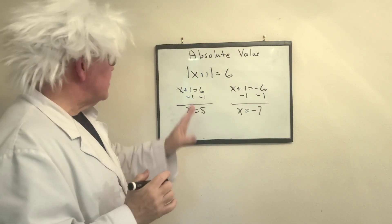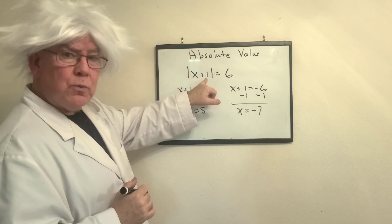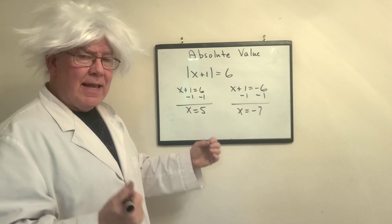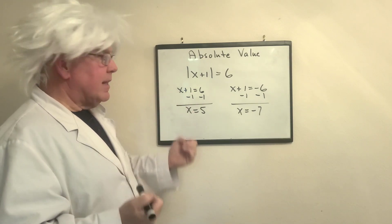Now, the other thing that we do is we plug them in to make sure. So 5 plus 1 is 6. The absolute value of 6 is 6. And negative 7 plus 1 is negative 6. The absolute value of negative 6 is 6.